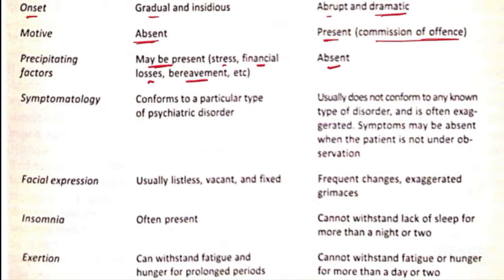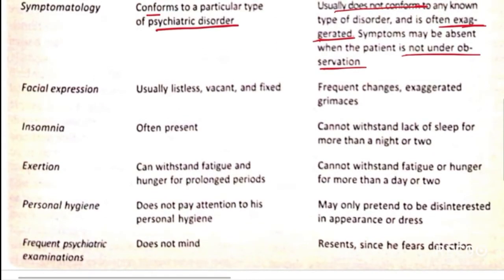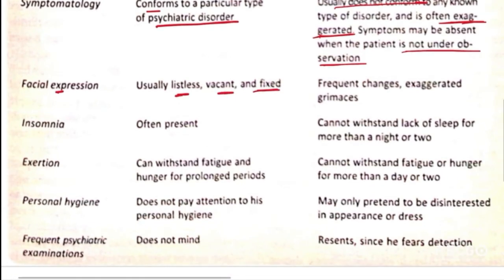In true insanity, symptomology conforms to a particular type of psychiatric disorder. In feigned insanity, symptoms usually do not conform to any recognized disorder and are often exaggerated — this is a very important point. Symptoms may also be absent when the patient is not under observation. Regarding facial expression, in true insanity it is usually listless, vacant, and fixed, whereas in feigned insanity it changes and exaggerated grimaces are seen.